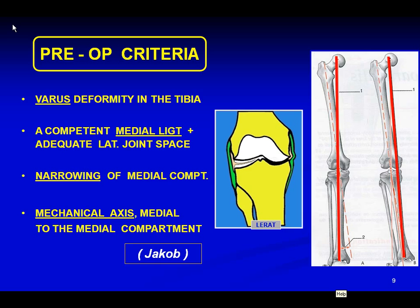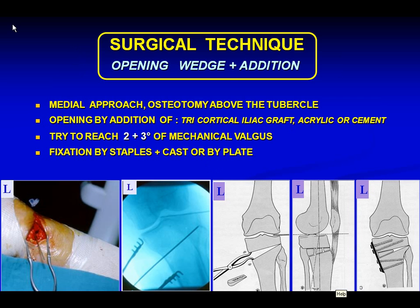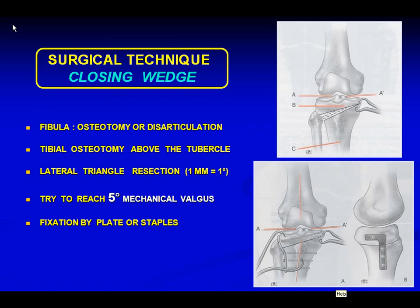Our aim in preoperative planning is restoring an axis angle of 2 degrees plus an over-correction of valgus to 3 degrees — that is 5 degrees total. This is a reminder of the opening wedge addition and the closing wedge classical operation, and sometimes we perform a morcellization of the inner part of the resected triangle in the closing technique.